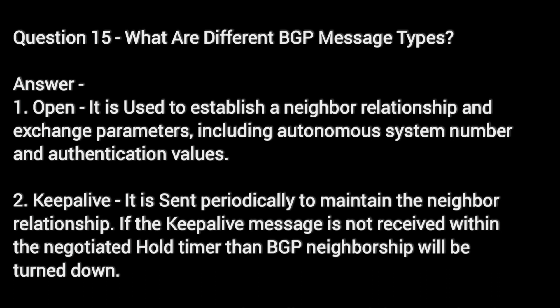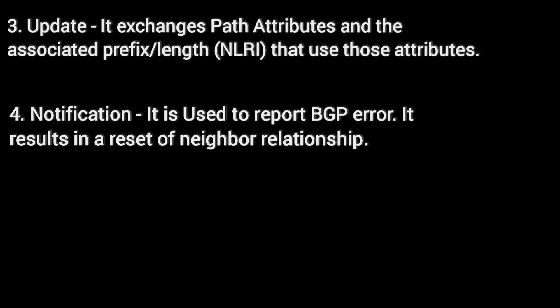Question 15: What are the different BGP message types? Answer. 1. Open — It is used to establish a neighbor relationship and exchange parameters, including autonomous system number and authentication values. 2. Keepalive — It is sent periodically to maintain the neighbor relationship. If the keepalive message is not received within the negotiated hold timer, then BGP neighborship will be torn down. 3. Update — It exchanges path attributes and the associated prefix length NLRI that use those attributes. 4. Notification — It is used to report a BGP error. It results in a reset of the neighbor relationship.